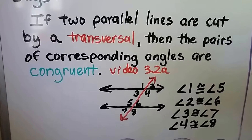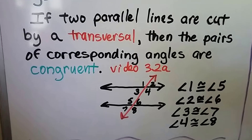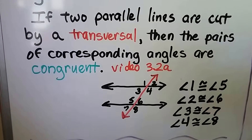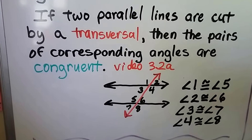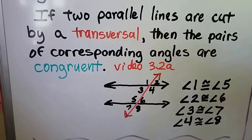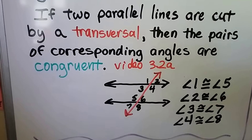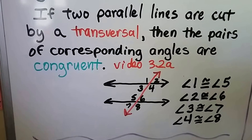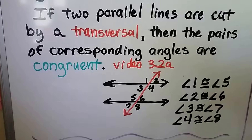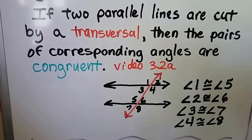We have two parallel lines, the black ones, cut by that red transversal, and we have corresponding angles that are congruent. Angle 1 and 5 are congruent, angle 2 and 6 are congruent, 3 and 7 are congruent, and 4 and 8 are congruent.